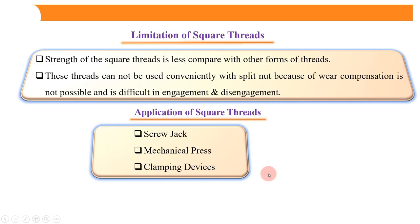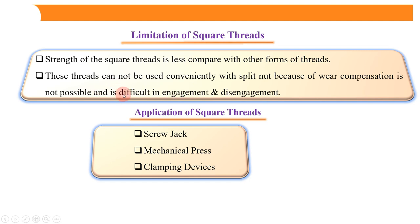Now, what are the various disadvantages of square threads? The strength of square threads is less compared with other forms of threads. Strength is the biggest parameter for transmitting power in any power transmission device, and square threads have less strength as compared to Acme threads and some other threads. Also, these threads cannot be used conveniently with a split nut because wear compensation is not possible, and engagement and disengagement is difficult.